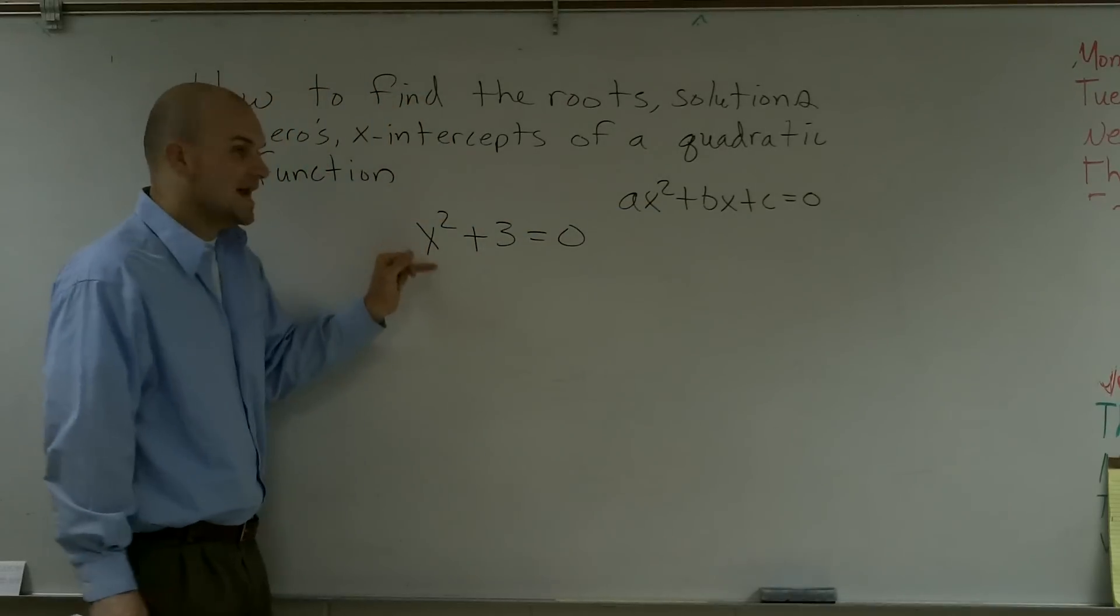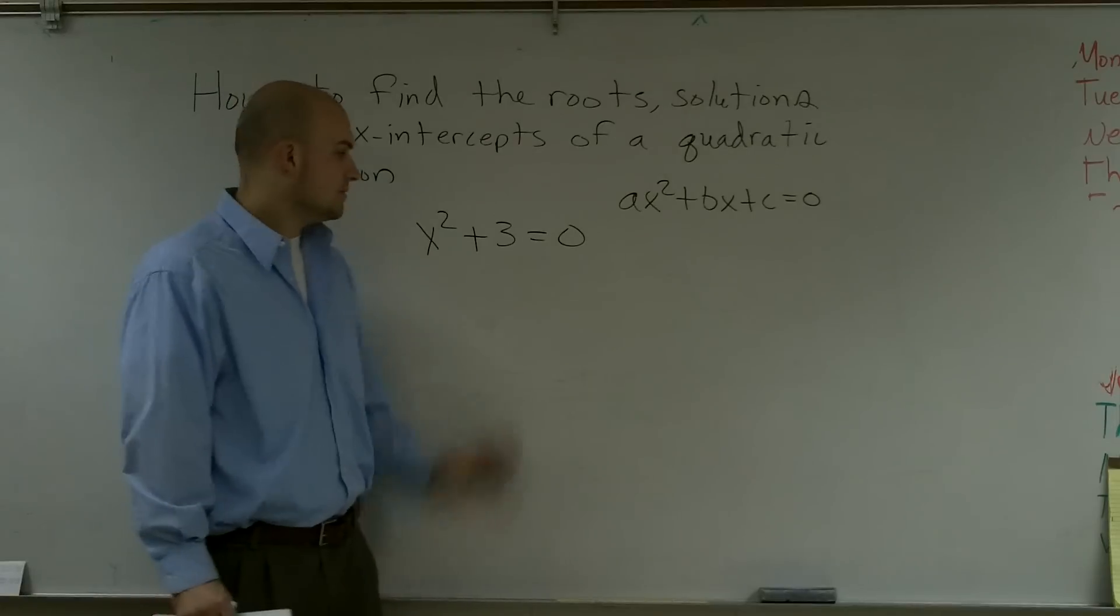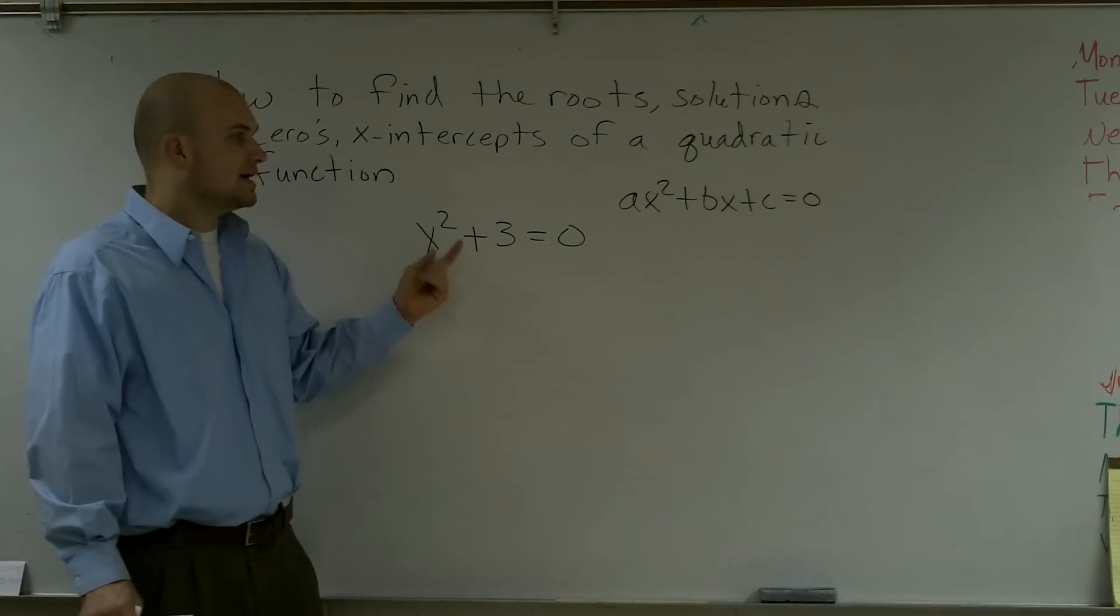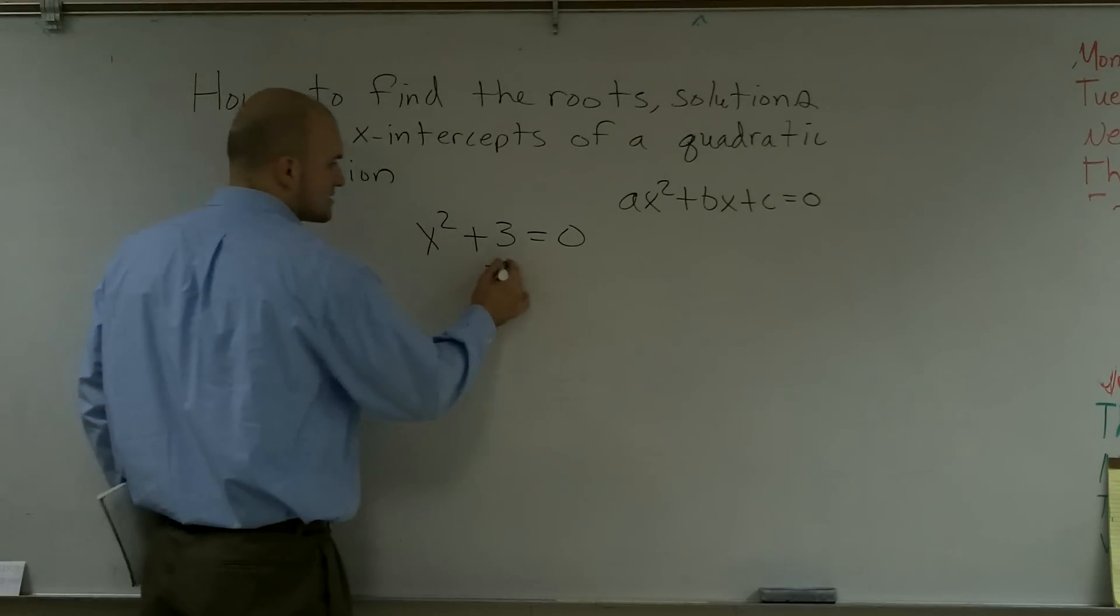Now here, what you notice is a is 1, b is 0, and I have a constant term. Well guys, this is a very simple one. I don't need to do any factoring or quadratic formula or anything like that. I can simply just solve for x.